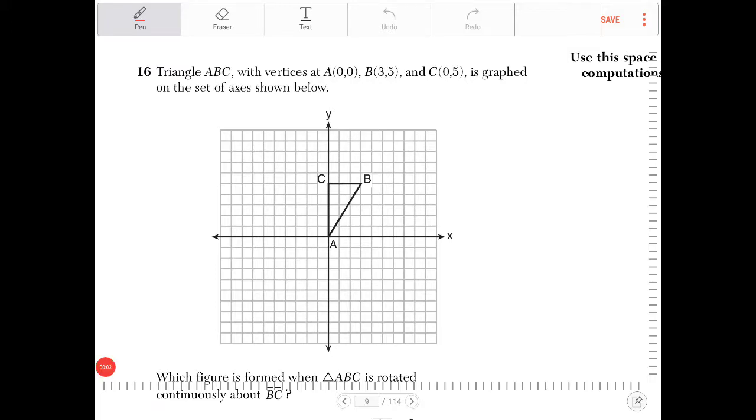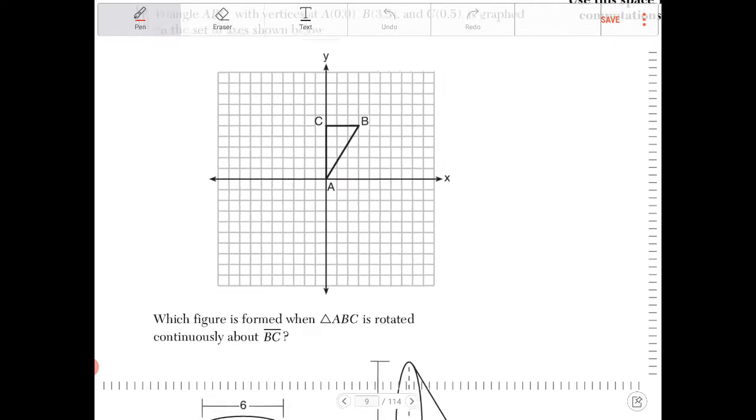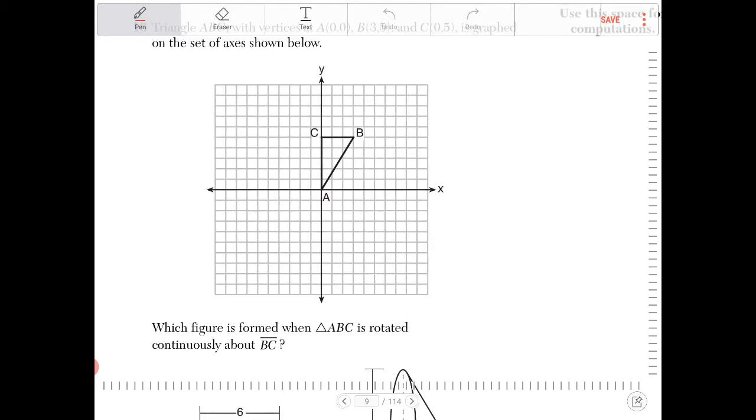Triangle ABC with vertices A(0,0), B(3,5), and C(0,5) is graphed on a set of axes below. Which figure is formed when ABC is rotated continuously about side BC?